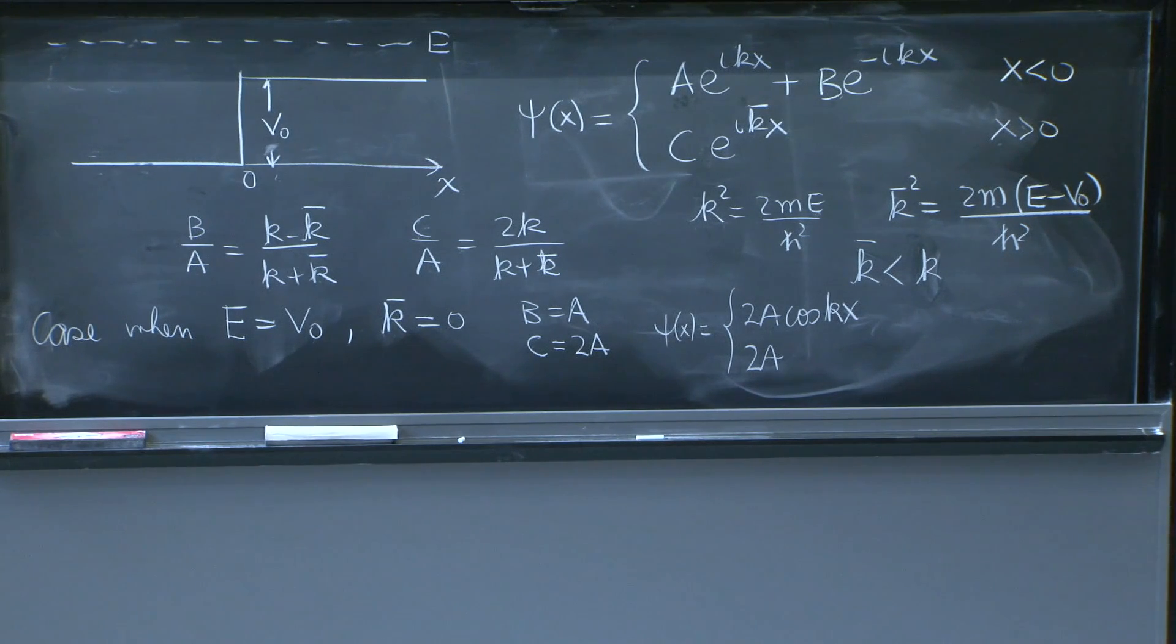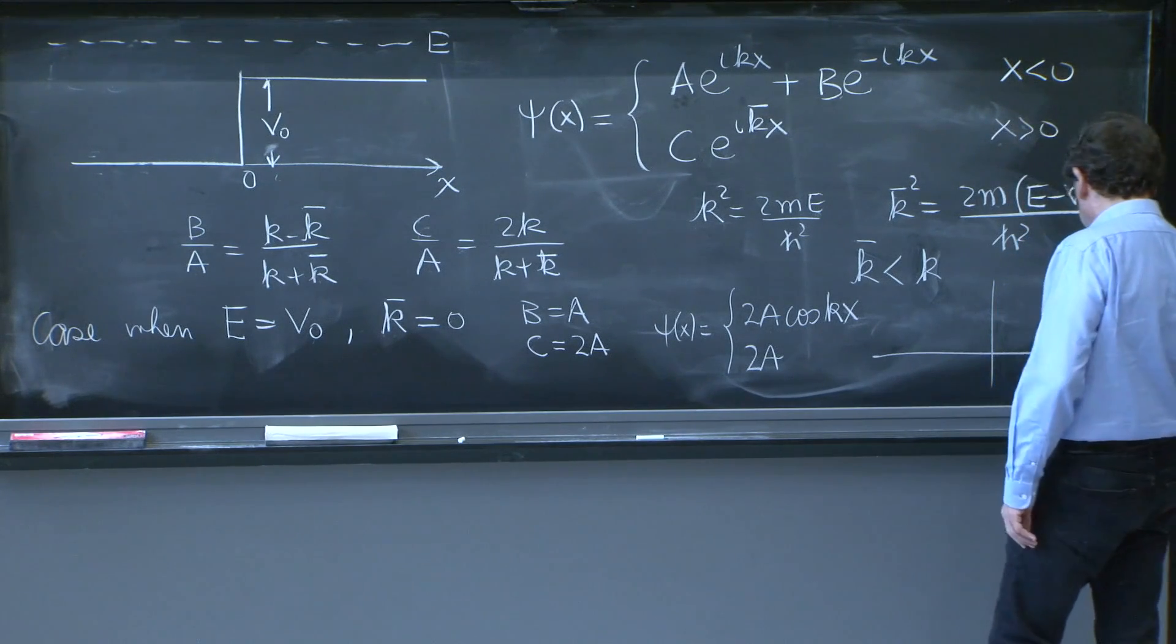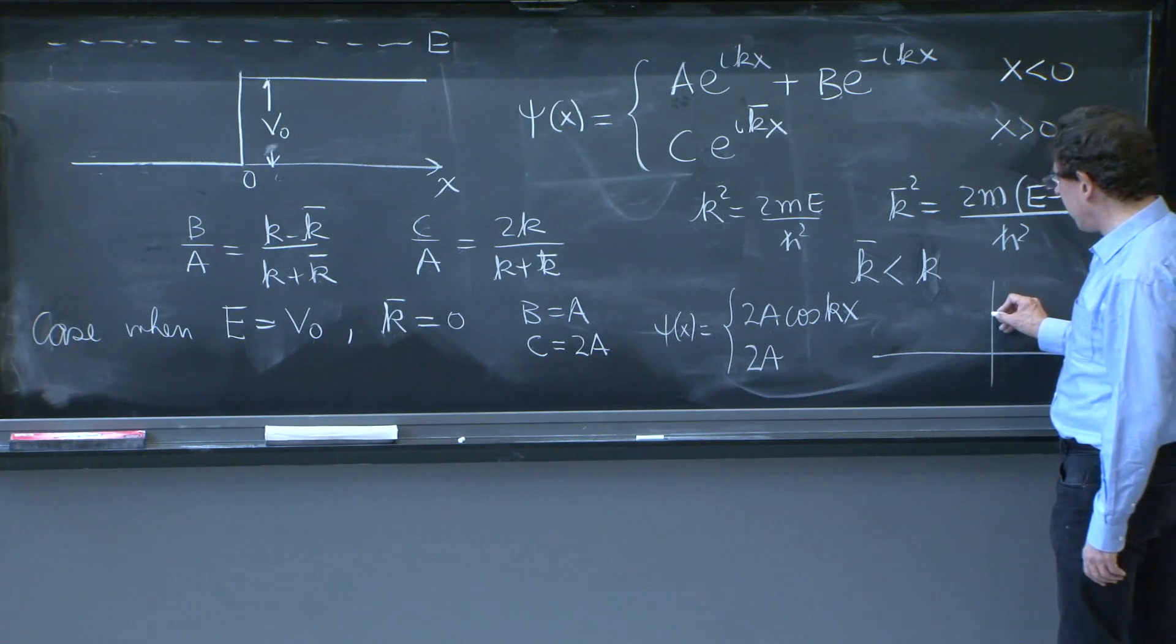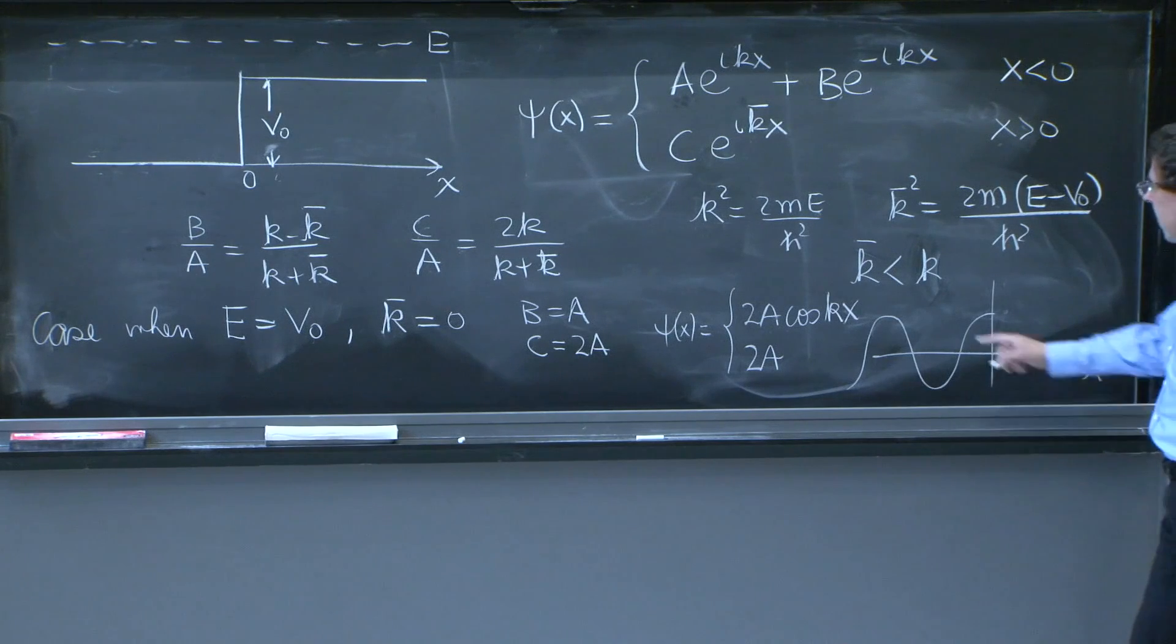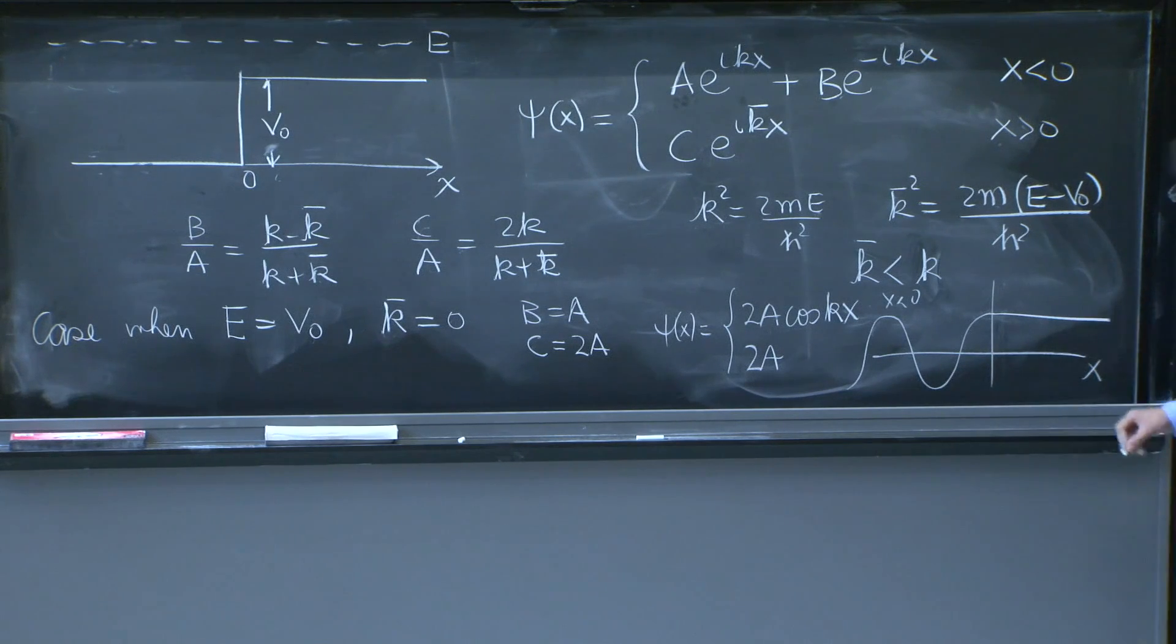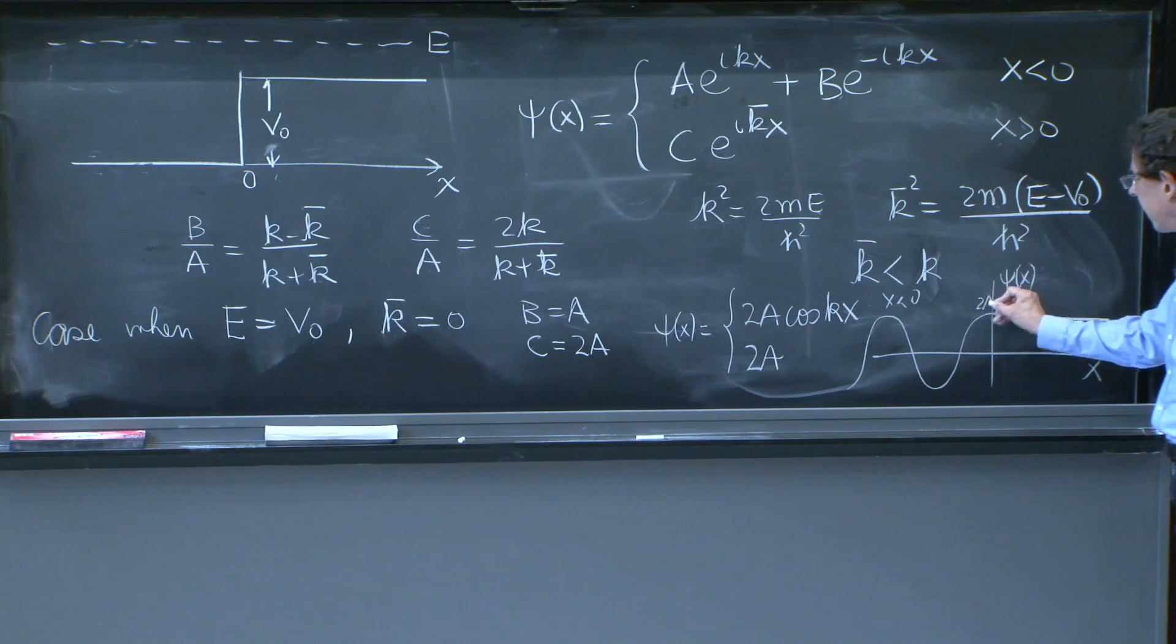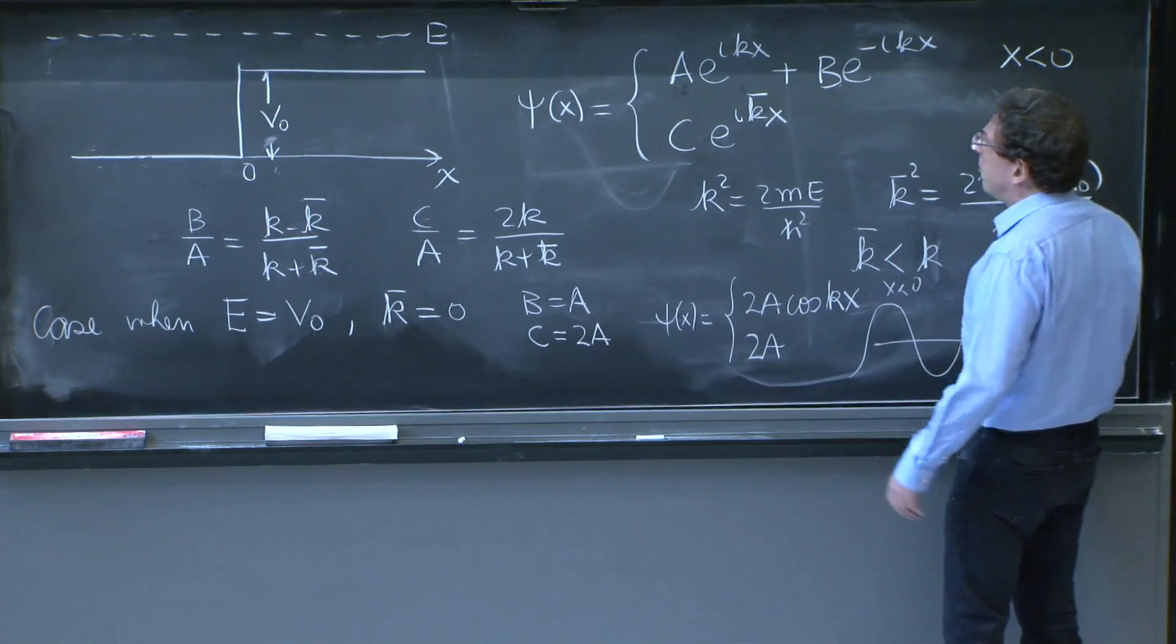So how does that look for x over here? You have a cosine of kx, so it's going to be doing this to the left. That's for x less than 0. And at this point, it goes like that. Just flat, ψ(x), and here is 2A. So there's nothing wrong with the solution in this case. It's kind of a little strange that it becomes a constant, but perfectly OK.